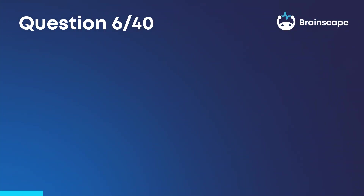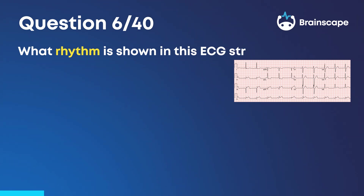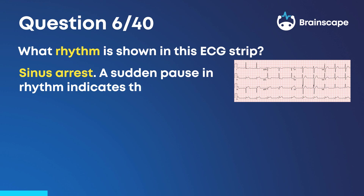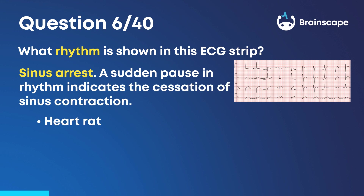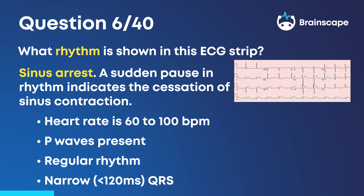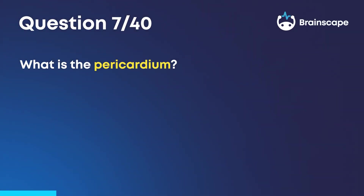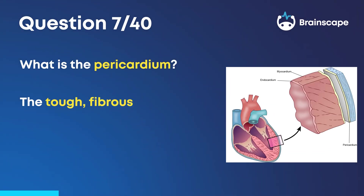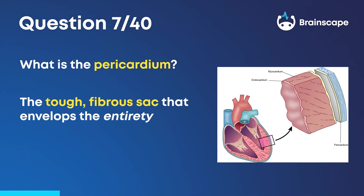Question 6: What rhythm is shown in this ECG strip? Sinus arrest. A sudden pause in rhythm indicates the cessation of sinus contraction. Heart rate is 60 to 100 BPM. P-waves are present. There is regular rhythm and a narrow QRS of less than 120 milliseconds. Question 7: What is the pericardium? The pericardium is the tough, fibrous sac that envelops the entirety of the heart.